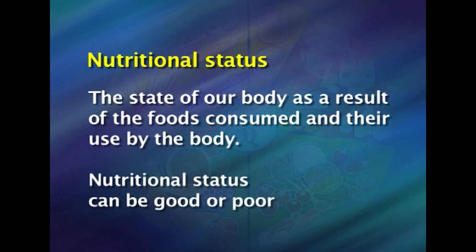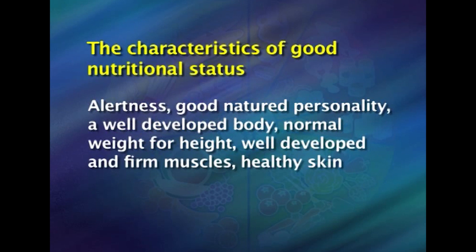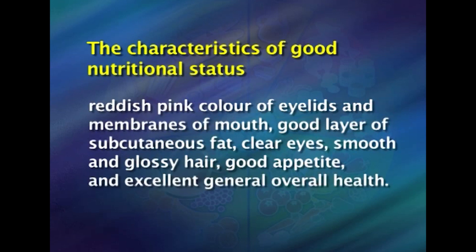Nutritional status can be either good or poor. The characteristics of good nutritional status are alertness, good-natured personality, a well-developed body, normal weight for height, well-developed and firm muscles, healthy skin, pink color of eyelids, good subcutaneous fat, clear eyes, smooth and glossy hair, good appetite, and excellent overall health.